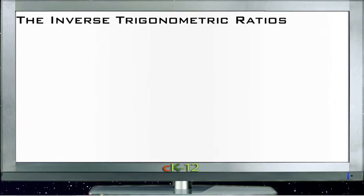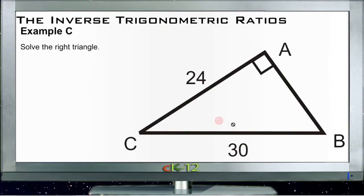Example C says solve the right triangle. Here we have two sides, we need one more side, and we have one angle, we need two more angles. First, let's solve for that final side using the Pythagorean theorem.